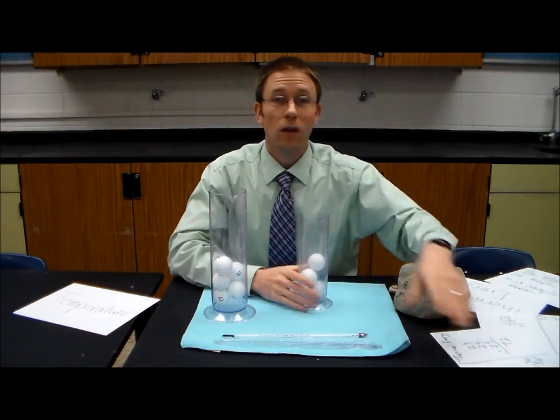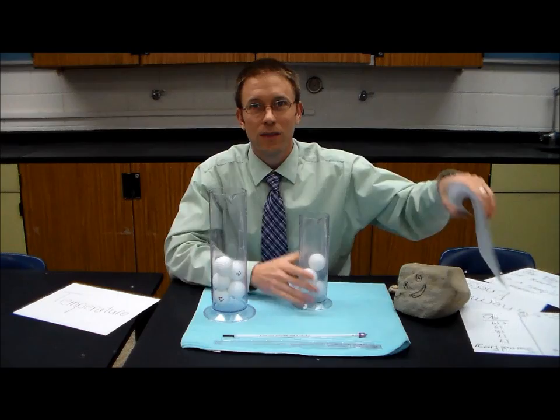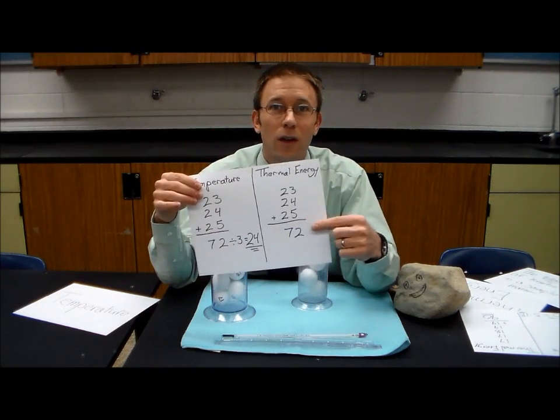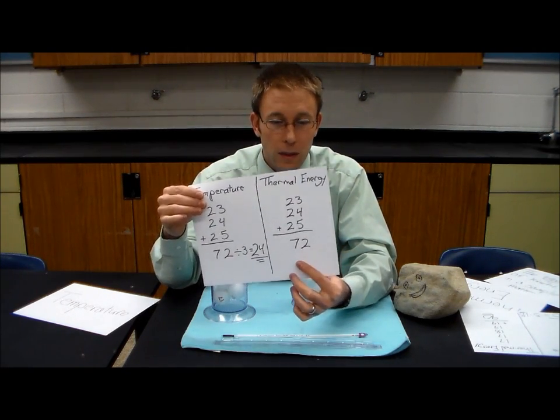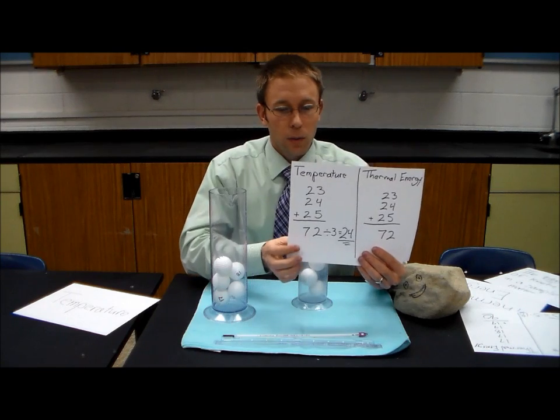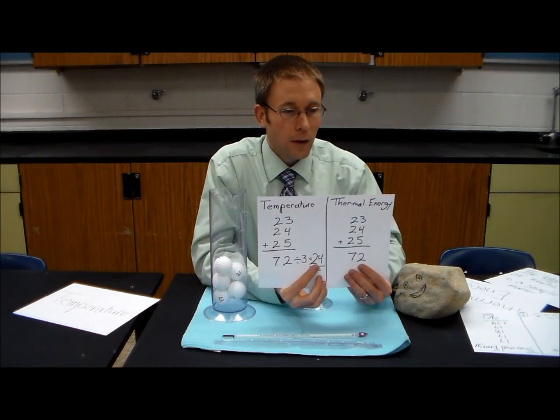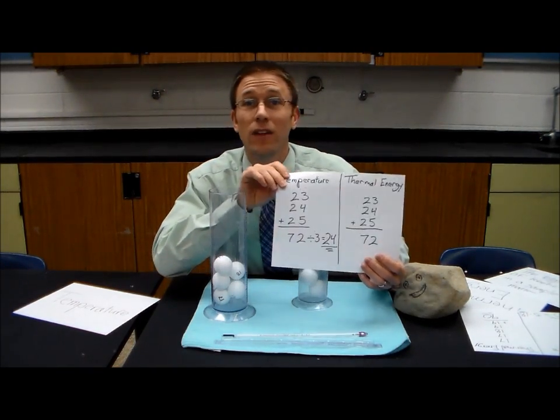Now, if we wanted to know the kinetic or the thermal energy, the total amount, well, it's almost the same. We just add them up, but then we don't divide them by the number of particles. We just keep that total. So here we have a small sample with a temperature of 24 and a thermal energy of 72.